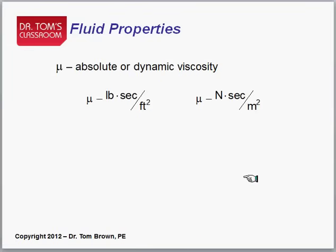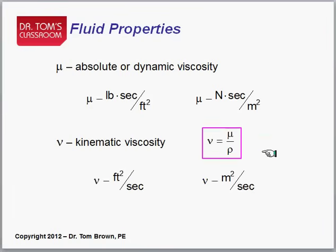For units on the viscosity, mu, there's in the U.S. system, pound seconds per foot squared and Newton's seconds per meter squared. And the kinematic viscosity, which is really the dynamic or absolute divided by density, which shows up a lot, is called kinematic viscosity, and it will have units of either feet squared per second or meters squared per second.